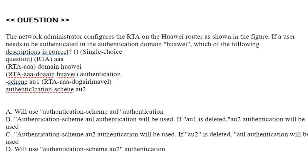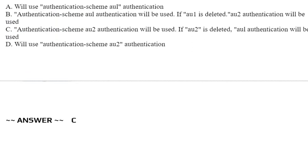Option A: Authentication scheme AU1 will be used. Option B: Authentication scheme AU1 authentication will be used; if AU1 is deleted, AU2 authentication will be used. Option C: Authentication scheme AU2 authentication will be used; if AU2 is deleted, AU1 authentication will be used. Option D: Authentication scheme AU2 authentication will be used. Correct answer is Option C.